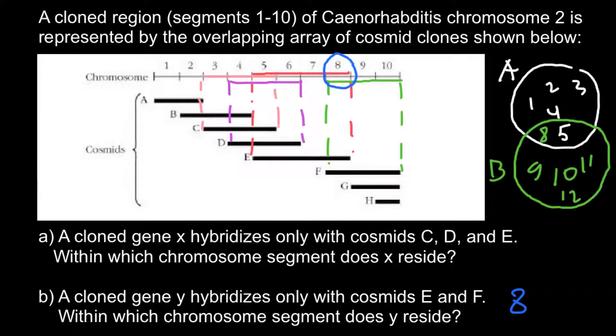And now we can see that we have overlapping of all three cosmids in fragment 5. Only in this fragment would all three cosmids C, D, and E overlap.